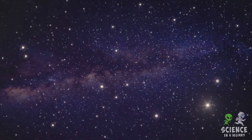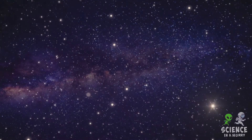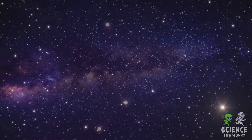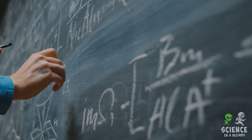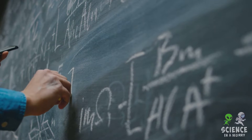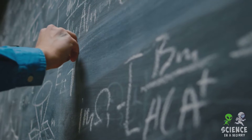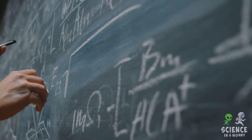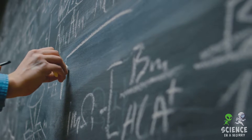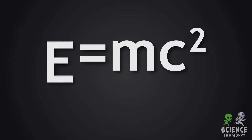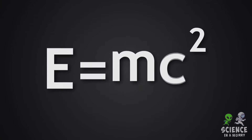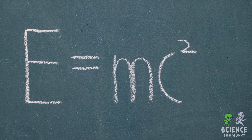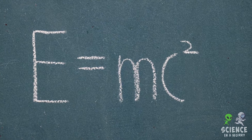Yet beneath the surface of this seemingly unfathomable complexity, we find a surprising simplicity — a simplicity that resonates with a fundamental truth about the universe. A truth that is elegantly encapsulated in a simple yet powerful equation: E equals MC squared. An equation so simple yet so powerful, but what does it mean?